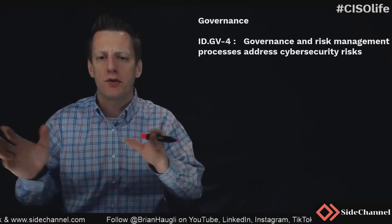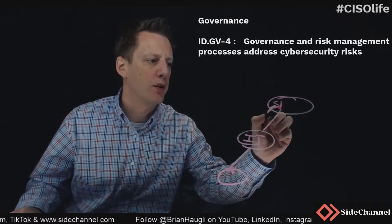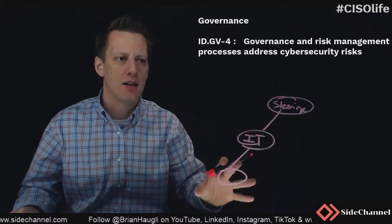Besides what we said in governance three, where we're looking at a regular cadence that should definitely be set up — where in your maturity does cybersecurity exist? If you're operating at the lowest level, is it just one individual? Is it underneath IT? Is it a single person identifying the risks, or is it within a larger IT construct for risk management?